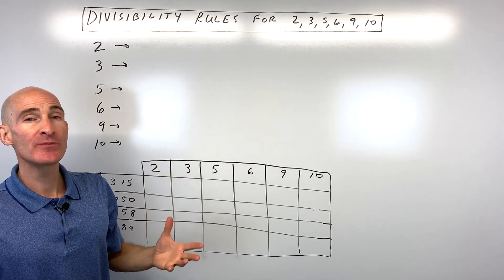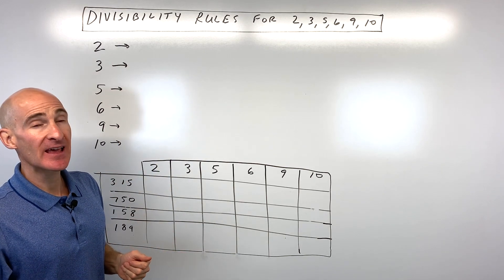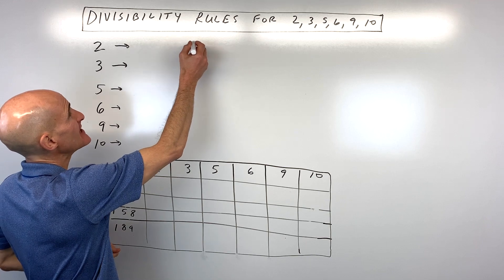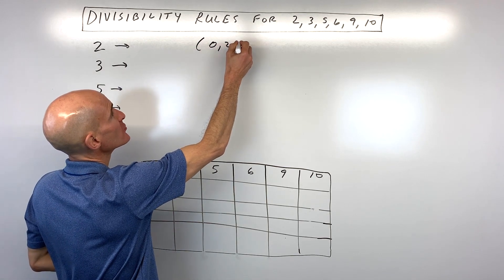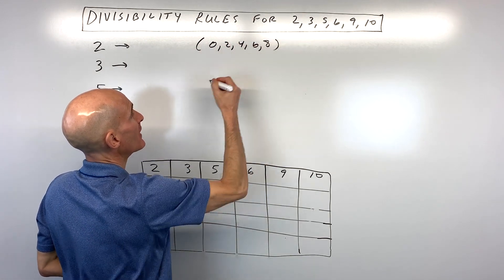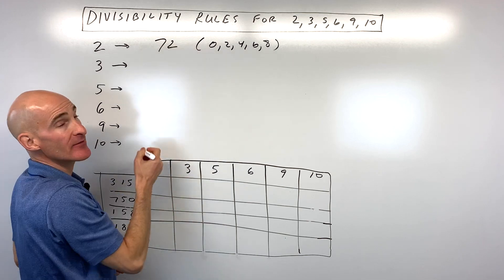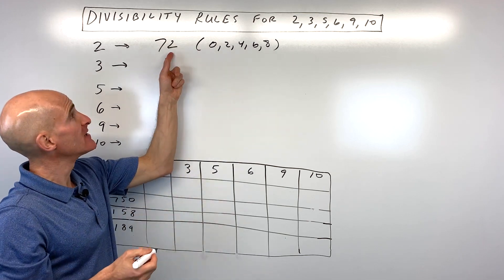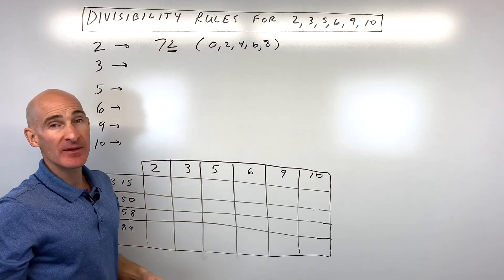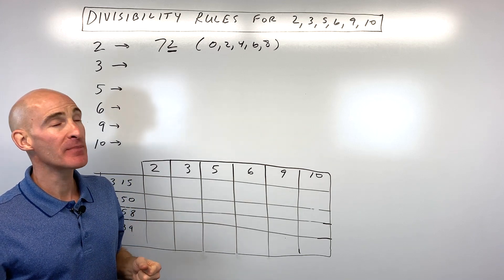The way that you know if a number is divisible by 2 is if the last digit of the number is even. An even number is like 0, 2, 4, 6, or 8. So say if you had the number 72 — see how that ends in a 2? That means that the whole number, 72, can be divided in half.